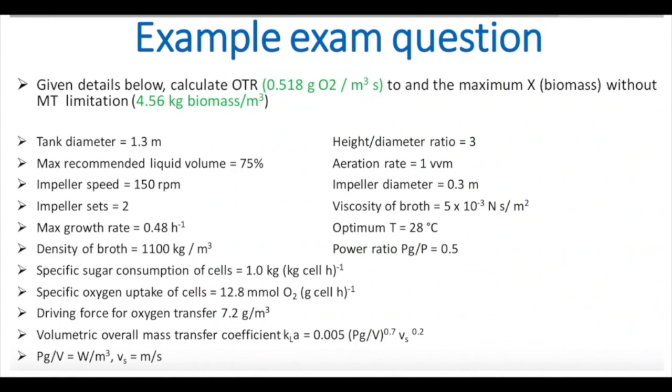This is an example of an exam question from previous years asking you to calculate OTR and then, based on OTR, the maximum biomass without mass transfer limitation. The answer is already provided in green if you want to try it yourself. These are quite long questions, so I'm going to walk you through all the steps. The first thing you start with is always the general formula for OTR: KLA times the driving force, the concentration gradient. You should realize that the driving force is already given in the question, so you don't have to calculate it yourself, but you need to calculate KLA before you can determine OTR.